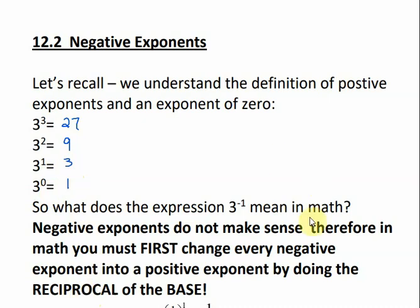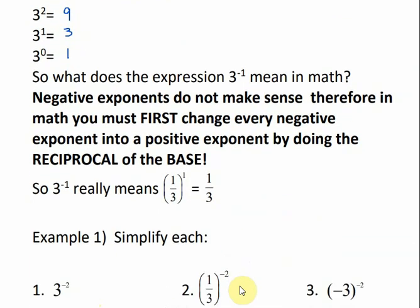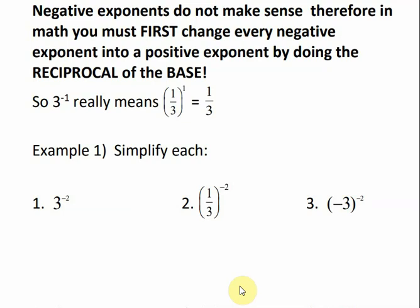So what does 3 to the negative 1 mean? Negative exponents don't make sense, so we have to change any negative exponent into a positive exponent by taking the reciprocal of the base — basically we just flip it. So if we see 3 to the negative 1 power, that really means 1 third to the positive 1 power. We just flip it.